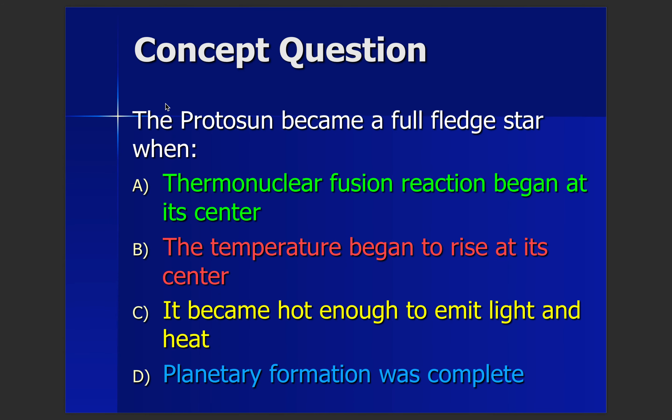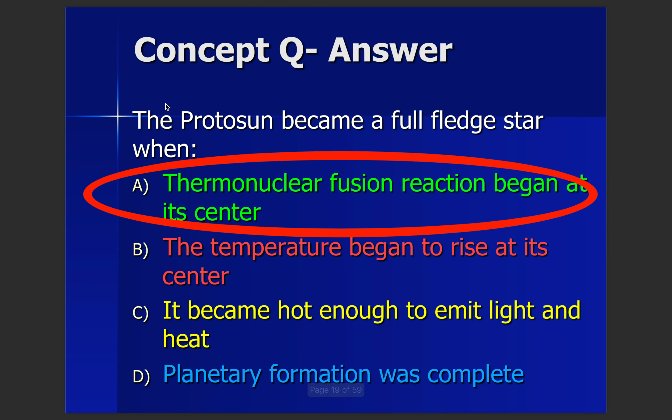The proto-sun came to a full-fledged star when thermonuclear fusion reactions begin in the center. It's not just that the temperature rises — that's what's happening in the proto-sun stage. The proto-sun becomes a full star when thermonuclear fusion actually begins.